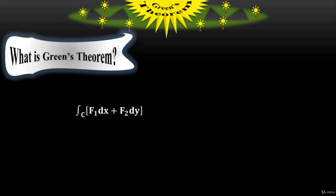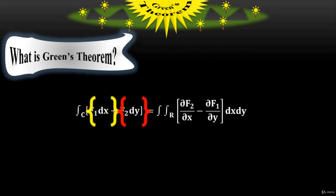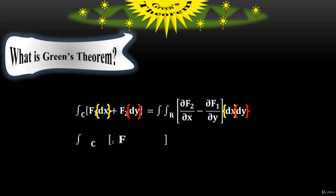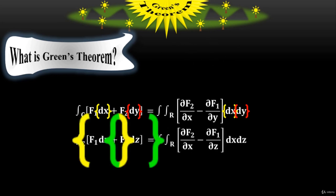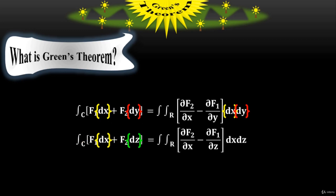If you take the object in the x-y plane, then the line integral has dx and dy, where the right side also has dx and dy. Functions f sub 1 and f sub 2 have been taken with respect to x and y. But if the object is in the x-z plane, then the line integral has dx and dz, where the surface integral also has dx and dz. Functions f sub 1 and f sub 2 have been taken with respect to x and z, so you take dx and dz on the right side as well.